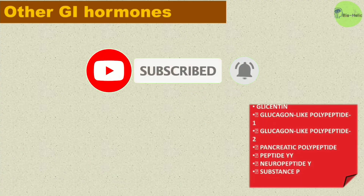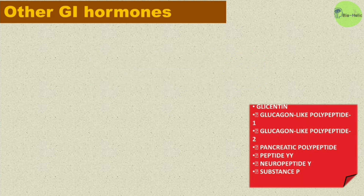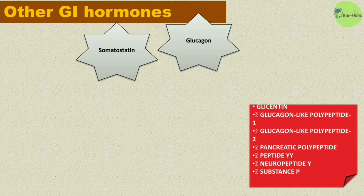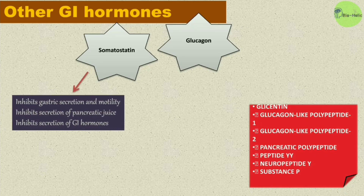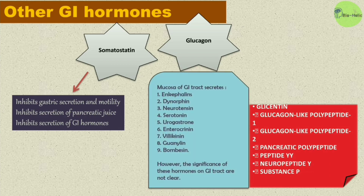Some other GI hormones include glicentin, glucagon-like polypeptide 1 (GLP-1), glucagon-like polypeptide 2 (GLP-2), pancreatic polypeptide, peptide YY, neuropeptide Y, and substance P. The pancreatic hormones glucagon and somatostatin are also secreted from the gastrointestinal tract. Somatostatin inhibits gastric secretion and motility, inhibits secretion of pancreatic juice, and inhibits secretion of all other GI hormones. The mucosa of the GI tract also secretes enkephalins, dynorphin, neurotensin, serotonin, urogastrone, enterocrinin, phyllocinin, guanylin, and bombesin, though the significance of these GI hormones is not yet clear.